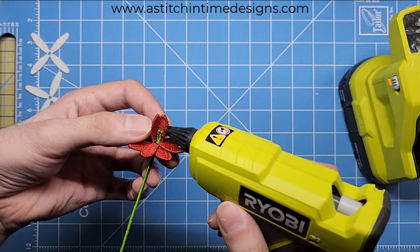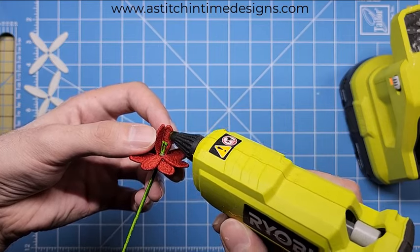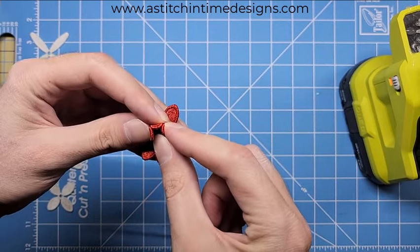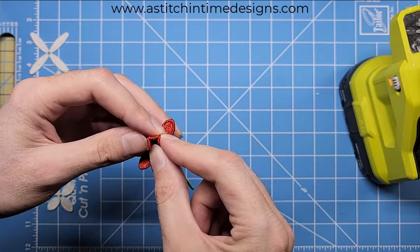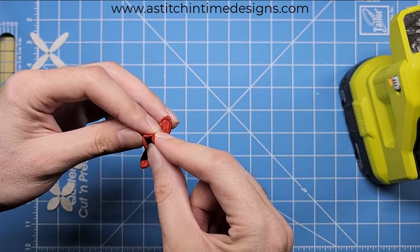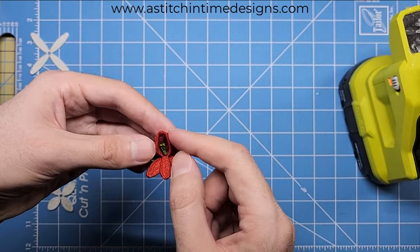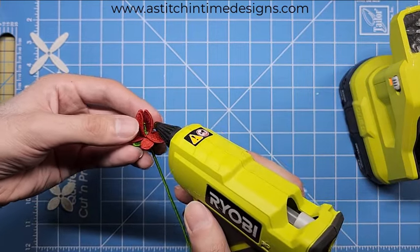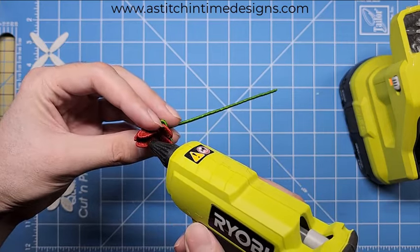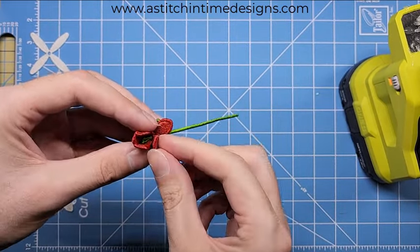And then I'm just going to do the same thing right here. Try and use as little glue as I possibly can. And just hold it just like that. And now, I'm going to do this one more time. Put a little bit of glue here. And I'm going to put a little bit of glue on the other side as well. And fold this last petal into place.